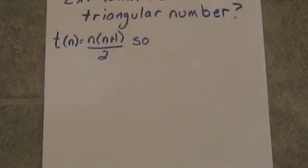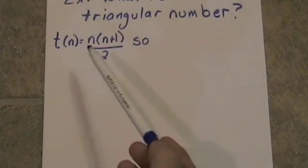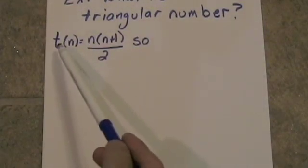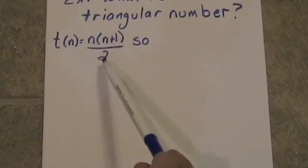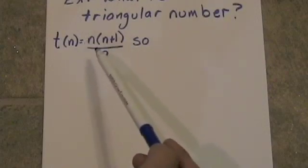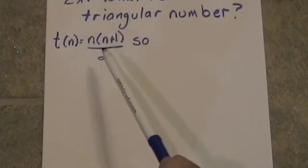Alright, so let's use this to find the 20th triangular number. Now, using Euler notation for this function, we would say that t is equal to n times the quantity n plus one over two. This is another way of writing multiplication by one-half. You're going to see it written like this quite frequently.